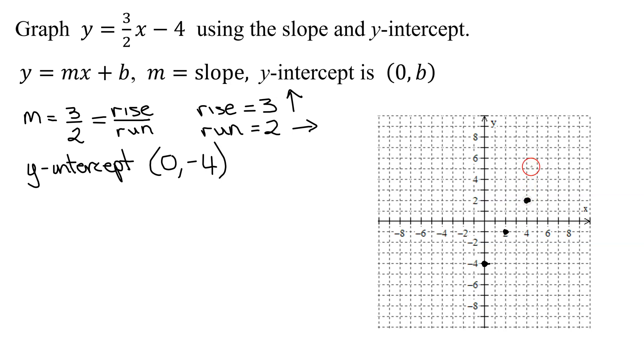So you can see I have a nice straight line here. If I wanted some points over to the left of the y-axis, I would have to reverse both of these directions. So I would go down 3 and left 2.